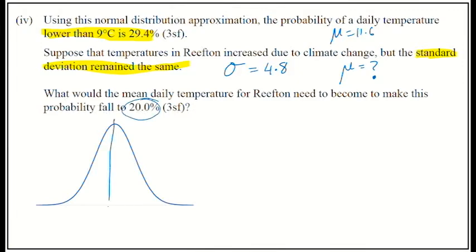So, we've got our distribution. I don't know what the mean is going to be. I know that the standard deviation is 4.8. And it's talking about the chance that the temperature is lower than 9 degrees. That probability there, we want that to fall to 20 percent. So, 20 percent as a decimal will be 0.2.